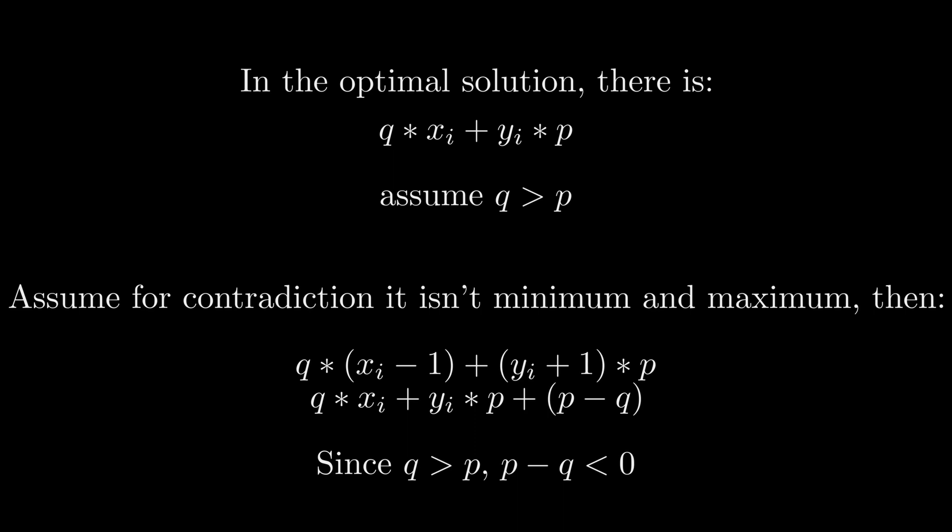And remember we assumed before q is larger than p? Had we swapped that, then xi would be the maximum and yi would be the minimum. So we have proven that the xi and yi must be the minimum and maximum possible in some order.